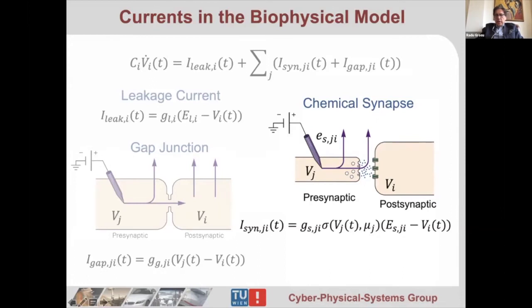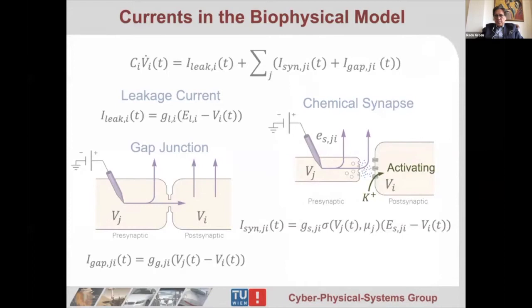You can write a very complicated differential equation about what is going on here, but this is simplified by assuming there is a maximum conductance gsij and a presynaptic potential-based conductance. This conductance has to be multiplied with the difference of potential to get a current. If the difference of potential is positive, then ions flow inside, so the synapse is activating. If the difference of potential is negative, this expresses the fact that ions are flowing outside, like the chloride ion, which is negative—it flows outside and the synapse is inhibiting.